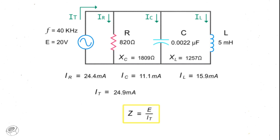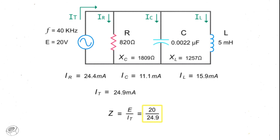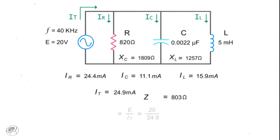Finally, we can calculate the total impedance by dividing the source voltage by the total current, which is 20 volts divided by 24.9 milliamps, or 803 ohms.